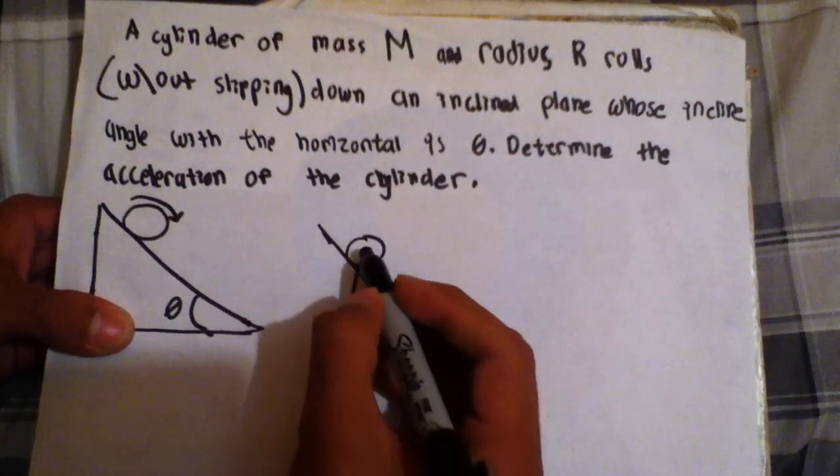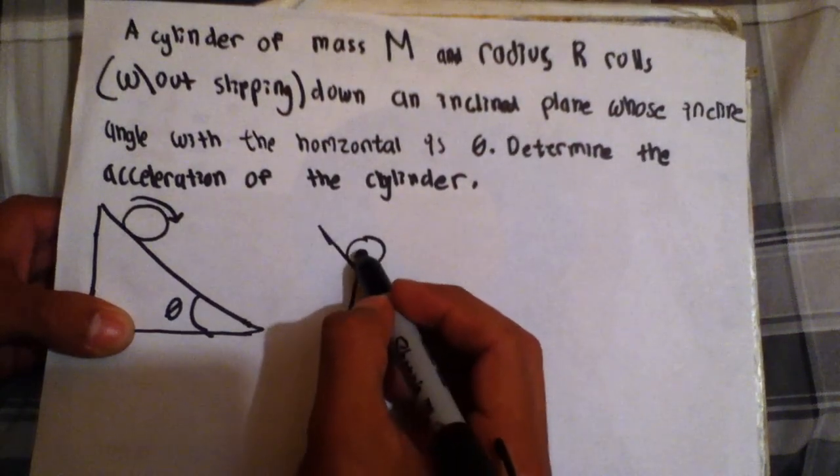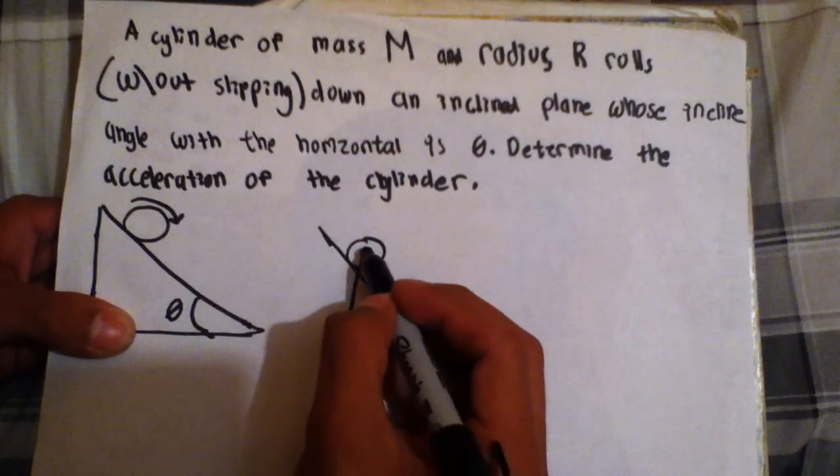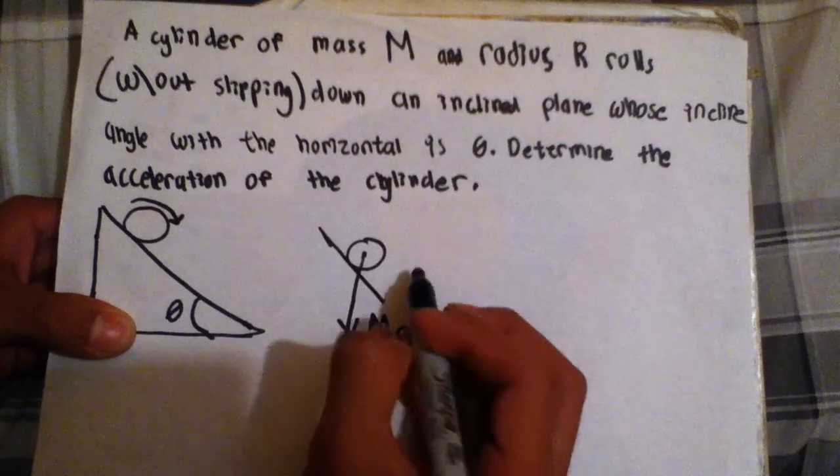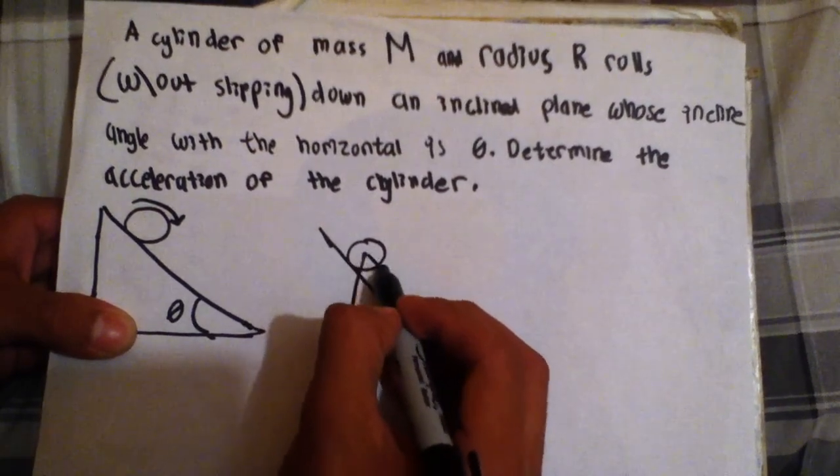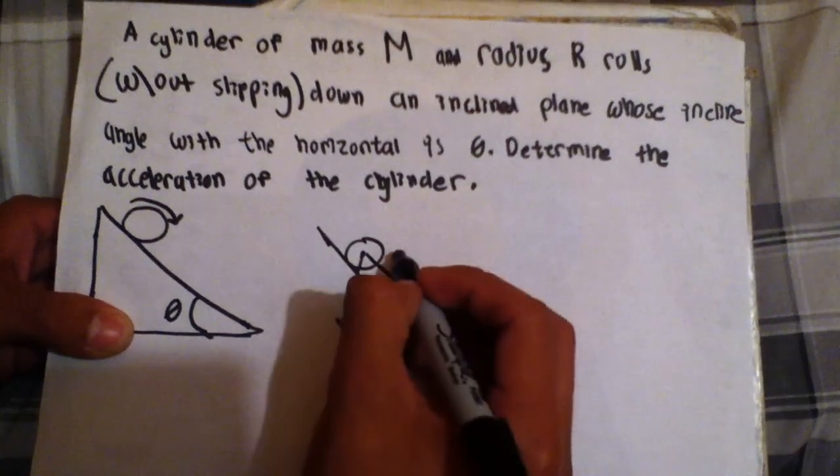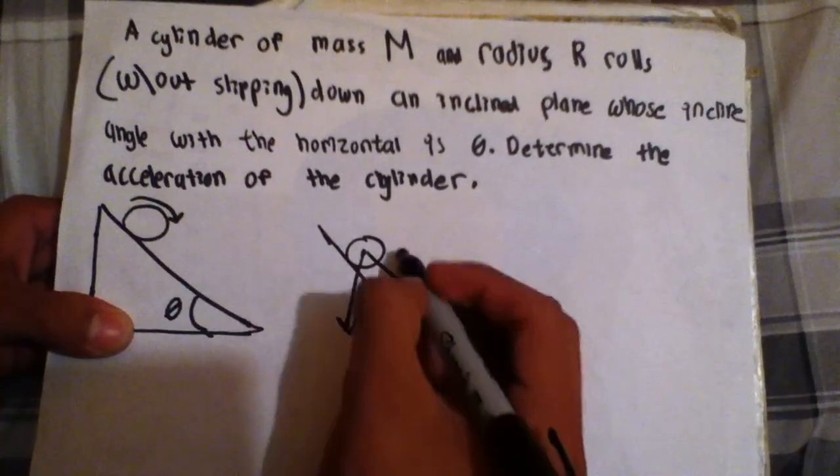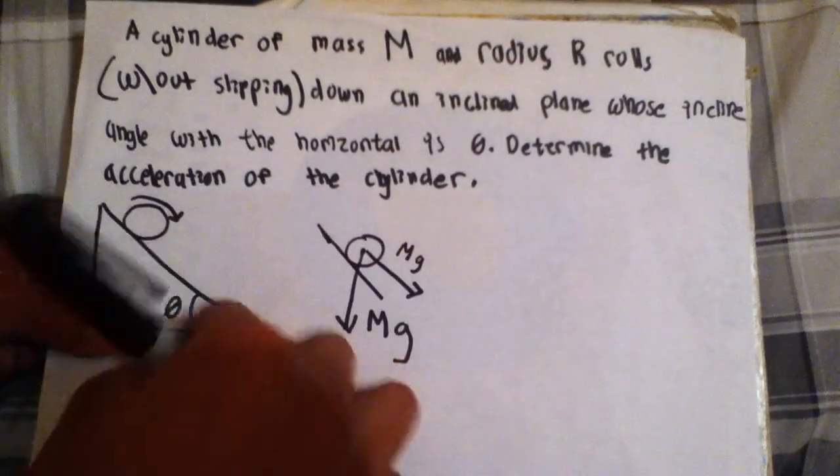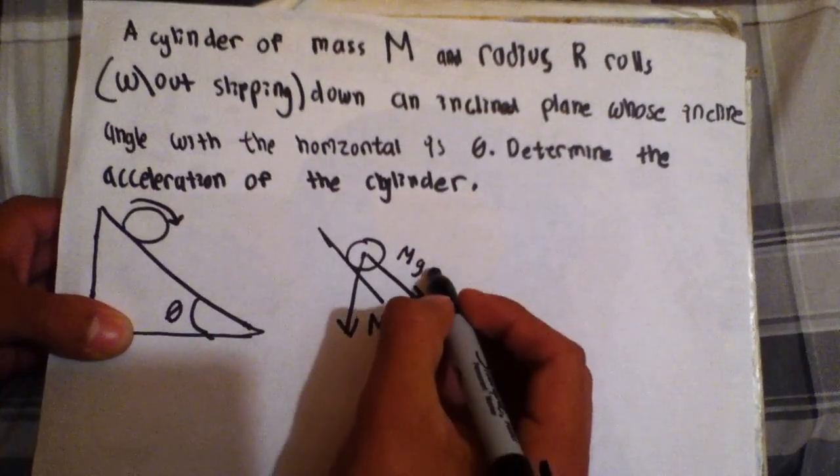However, there's also a component which is right here, mg cosine. And then there's mg sine, which is going that way. So in this problem, mg sine is going to be important because it's going down the ramp. And we'll see right now why mg cosine doesn't really play a role in this particular problem.